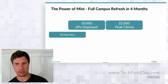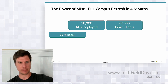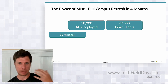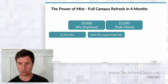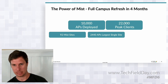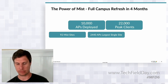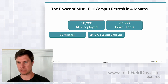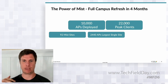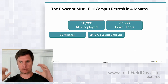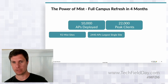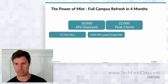They had about 22,000 peak concurrent clients. Within MIST they have 92 sites — some very large with many APs, some small with just a handful. The largest site has over 2,400 APs. With a traditional controller design, this is where you'd wrestle with RF domains, mobility domains, site tags, and logical segmentation. Not really a concern with MIST — we handle the very large and the very small.